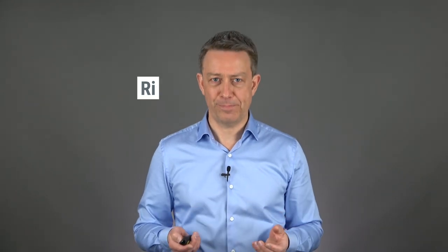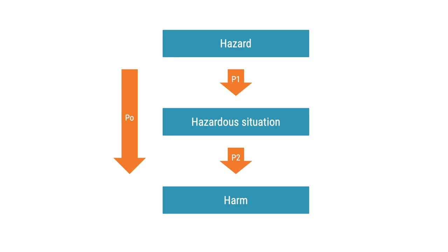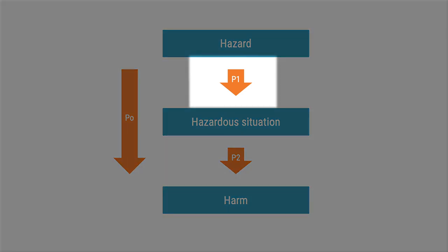I assume you have some basic understanding of risk management. One of the most misunderstood statements in this field is that the probability of occurrence of harm should be set to 100% just because you're working with software. That statement is wrong. Probability of occurrence of harm can be split up into two components: P1 and P2. P1 is the probability of occurrence of the hazardous situation. P2 is the likelihood that the hazardous situation will lead to harm.